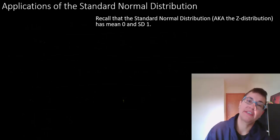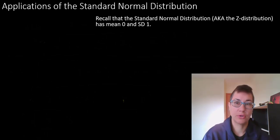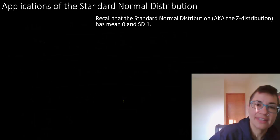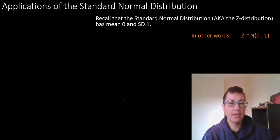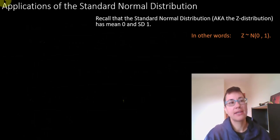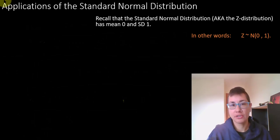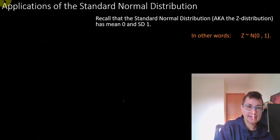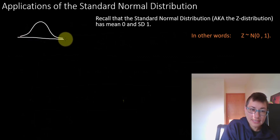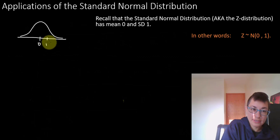Recall and review that the standard normal is a normal distribution, of course. It has that classic bell shape, but it has very nice properties, namely the center or the mean is at 0. So I can draw this 0 in the center, and the standard deviation is 1. Very nice properties.